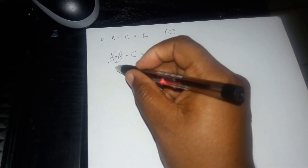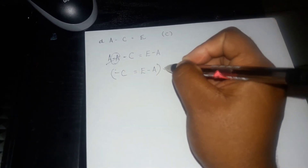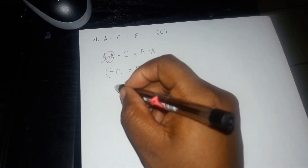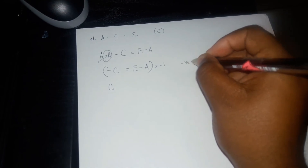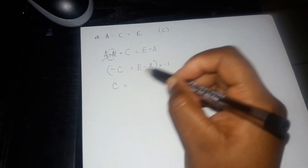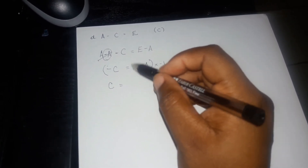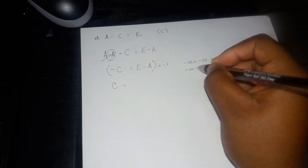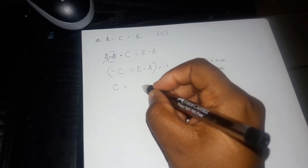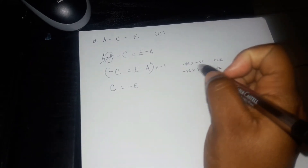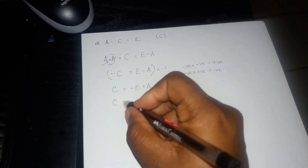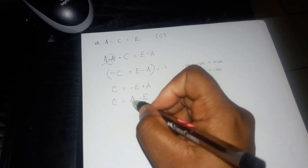To make it positive c, you multiply through by negative one. A negative times a negative gives you a positive variable or number. So negative one times negative c gives you c. Negative one times positive e gives you negative e, and negative one times negative a gives you positive a. You can switch it around so it looks like what you're accustomed to: c equals a minus e. A is positive and e is negative.